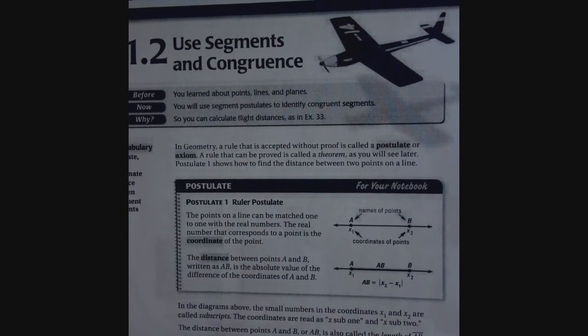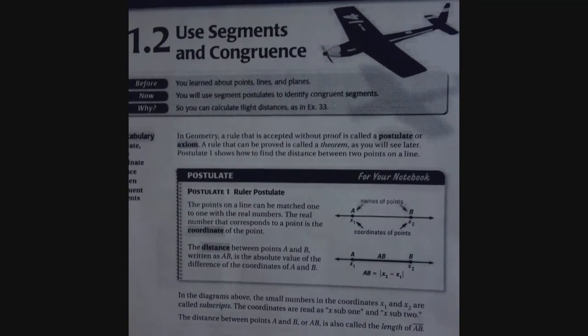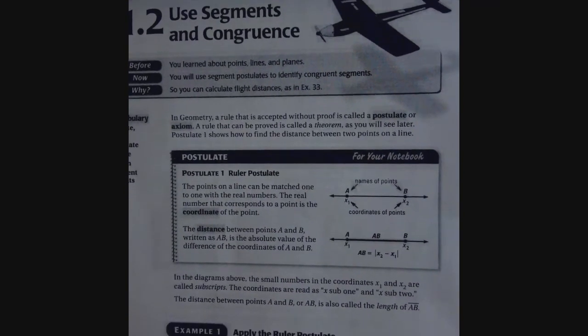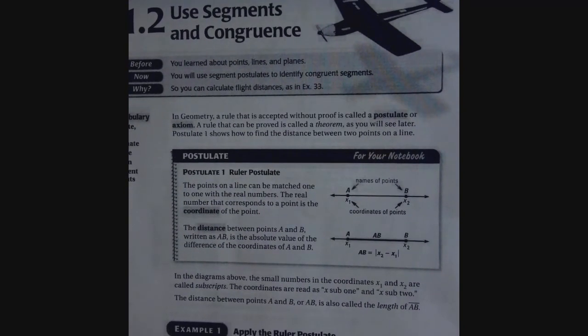As you will see later, postulate 1 shows how to find the distance between two points on a line. So we're going to start here first with postulate 1, the ruler postulate.